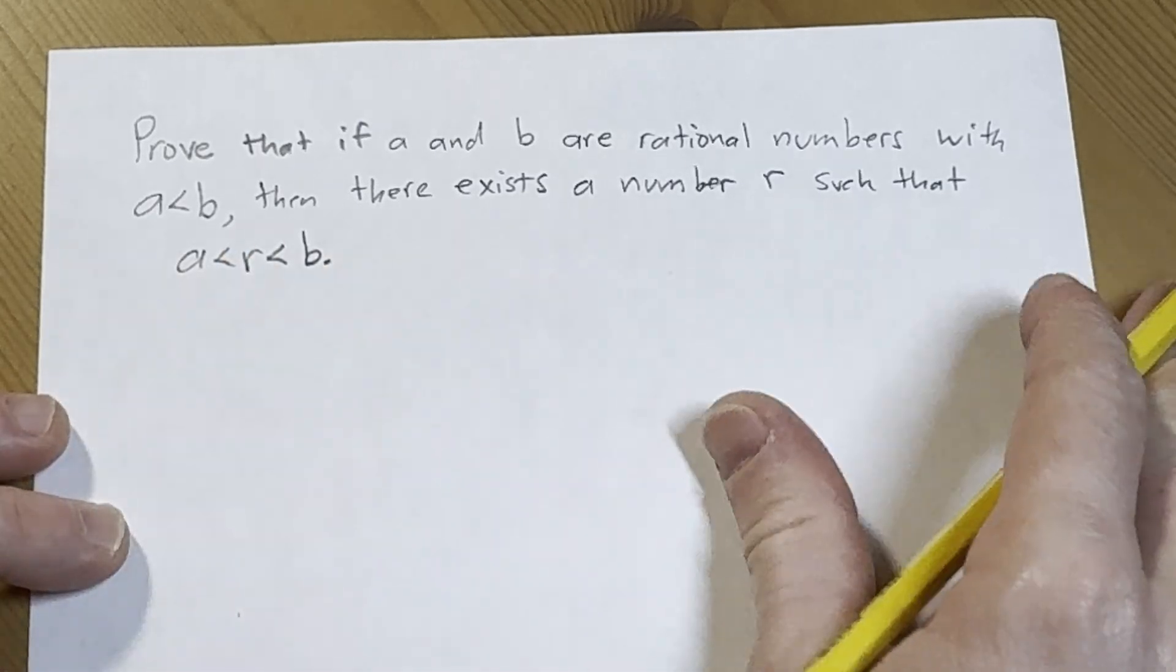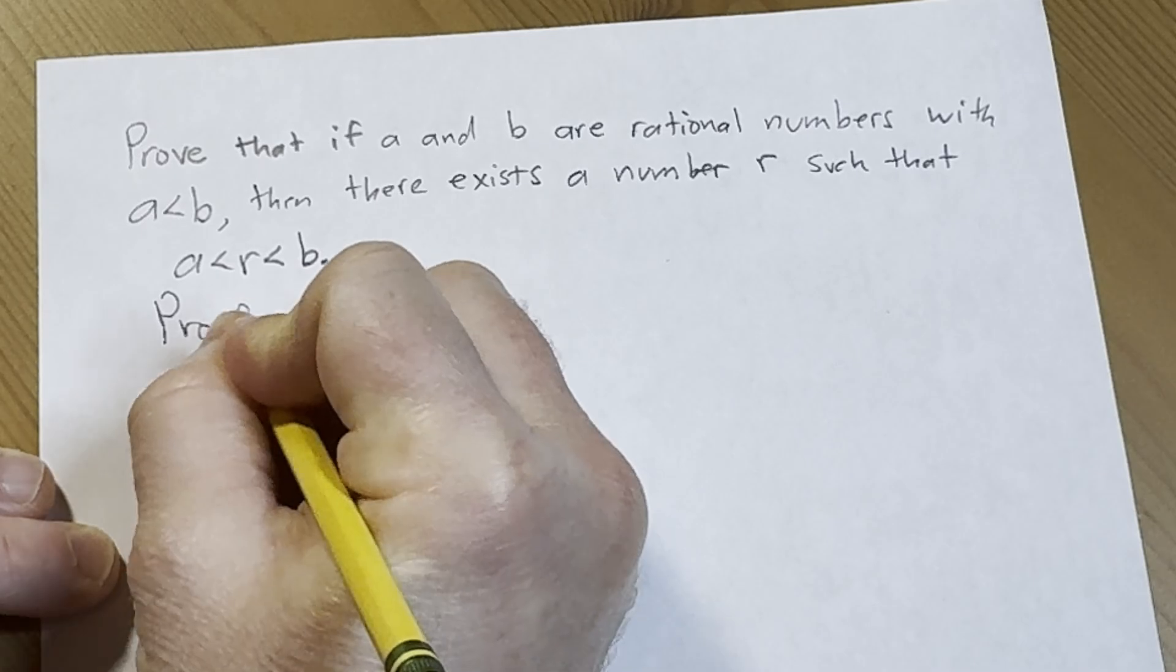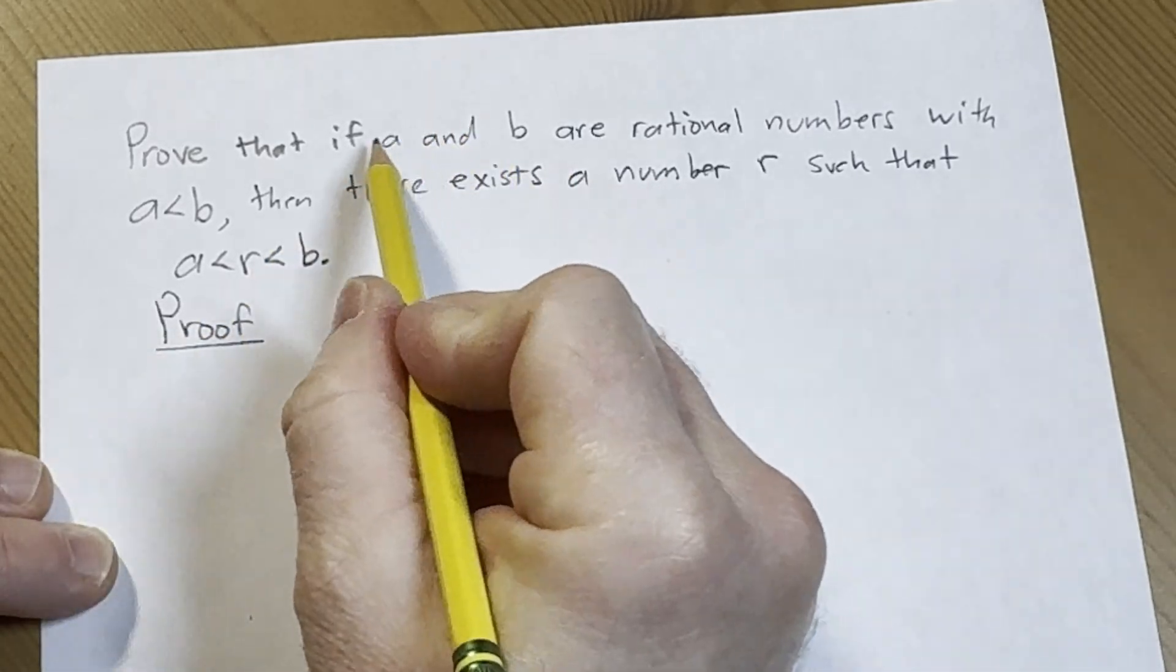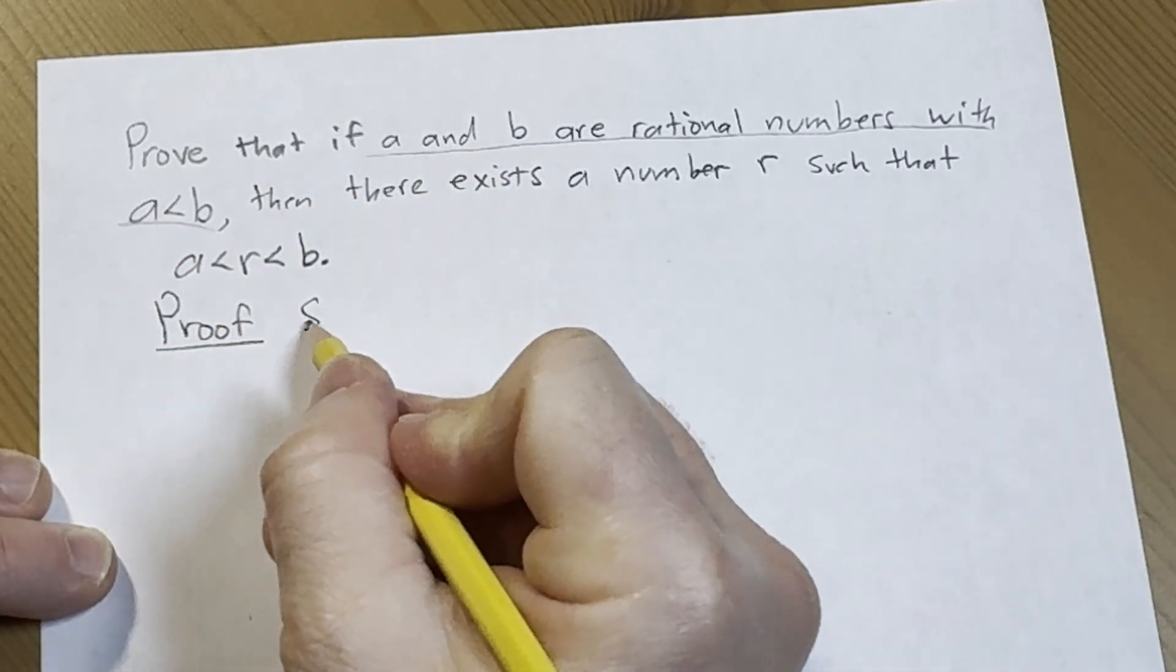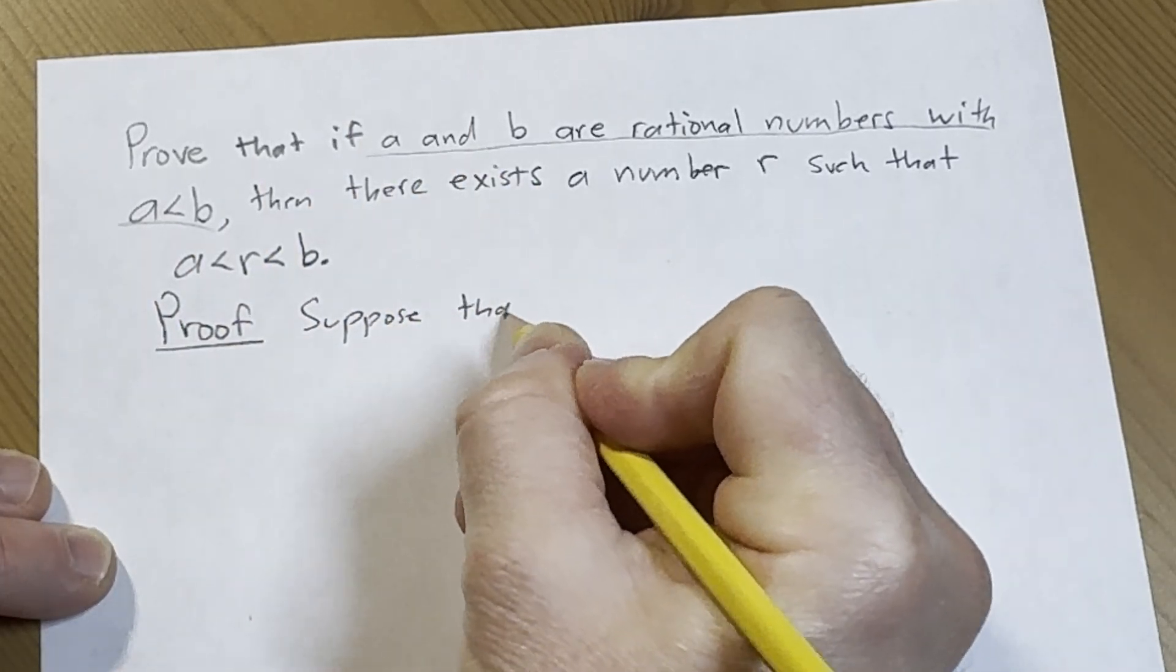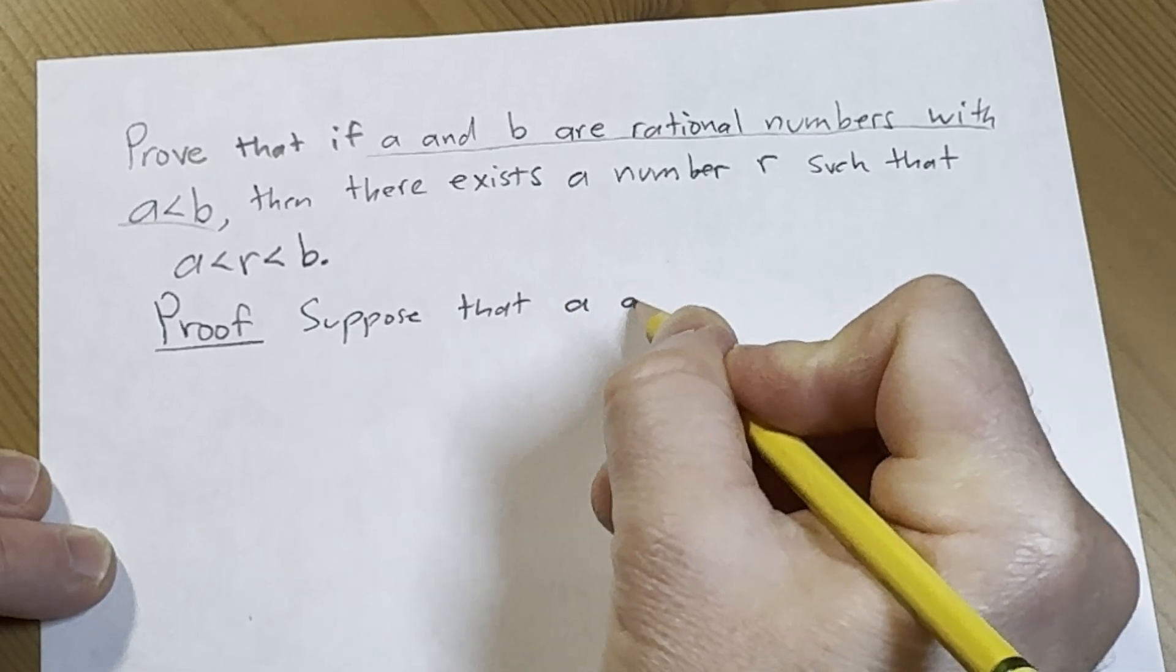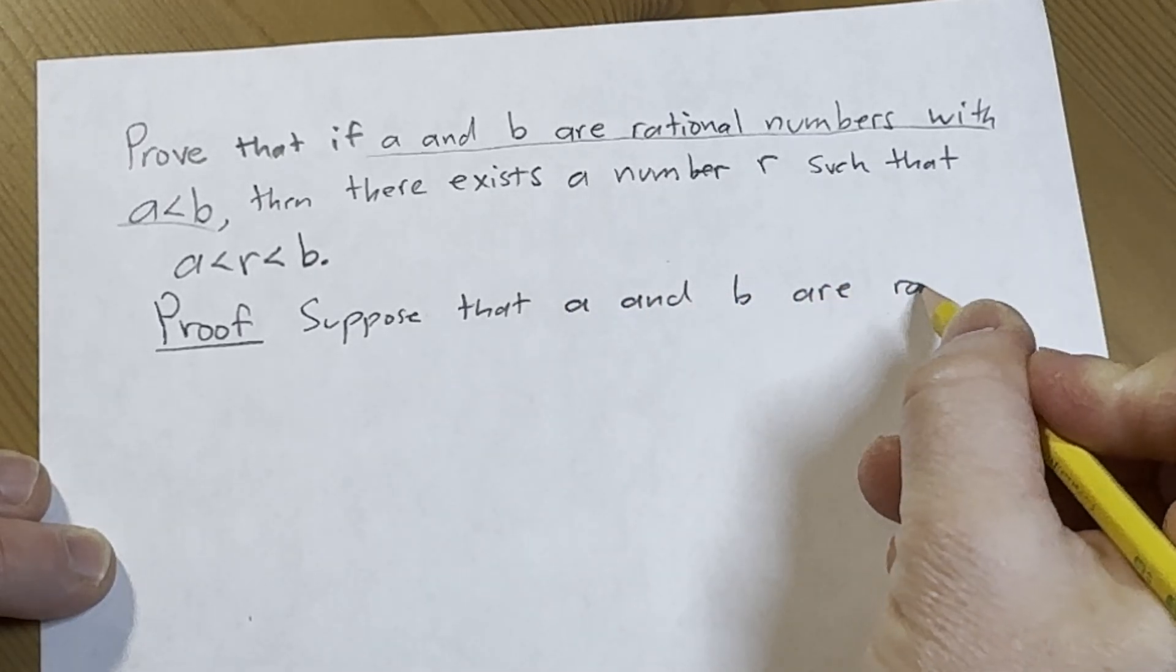Okay so let's go ahead and go through the proof. So, proof. We'll start by assuming that we have two rational numbers with a less than b. So suppose that a and b are rational numbers...